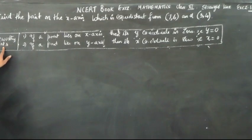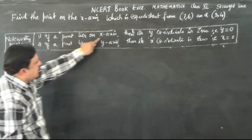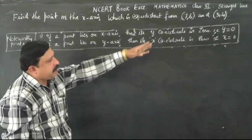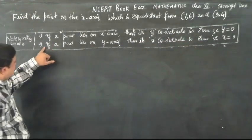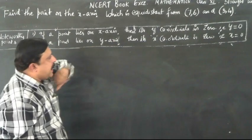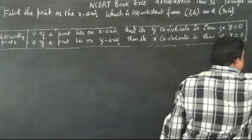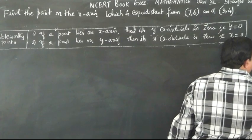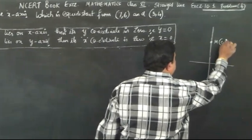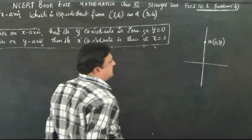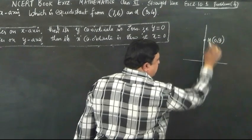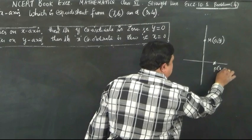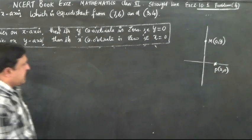Note: if a point lies on the x-axis, then its y-coordinate is 0, that is y equals 0. Similarly, if a point lies on the y-axis, say M is a point, then its x-coordinate is 0.